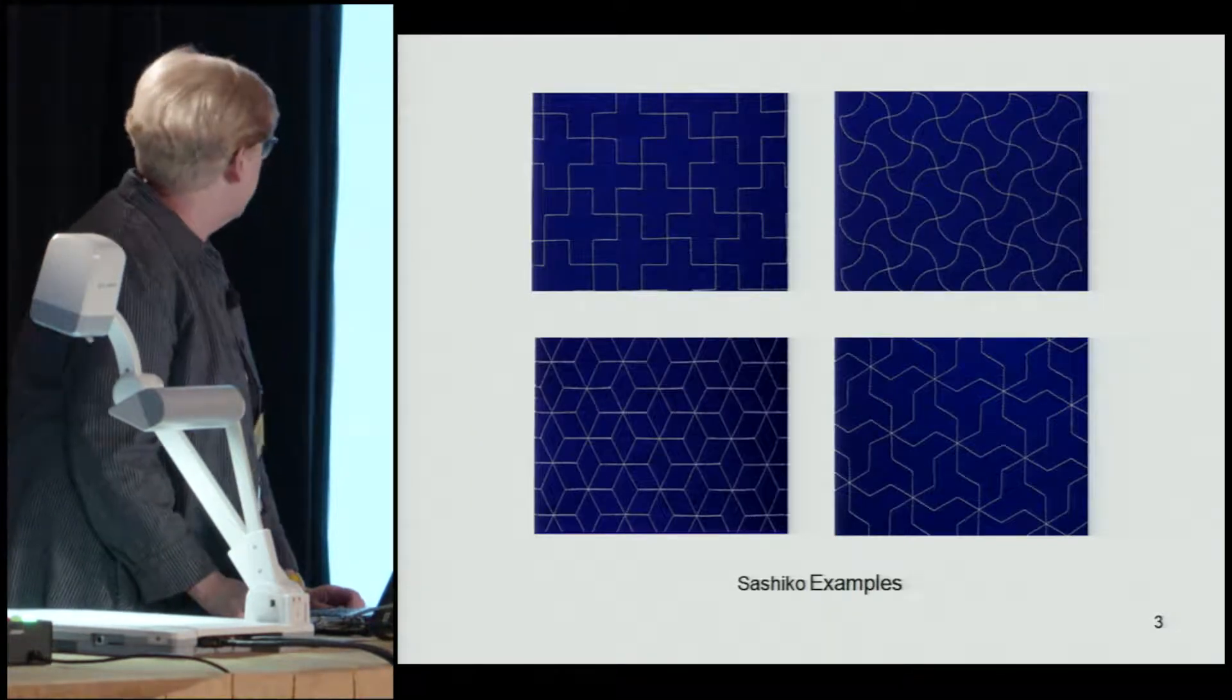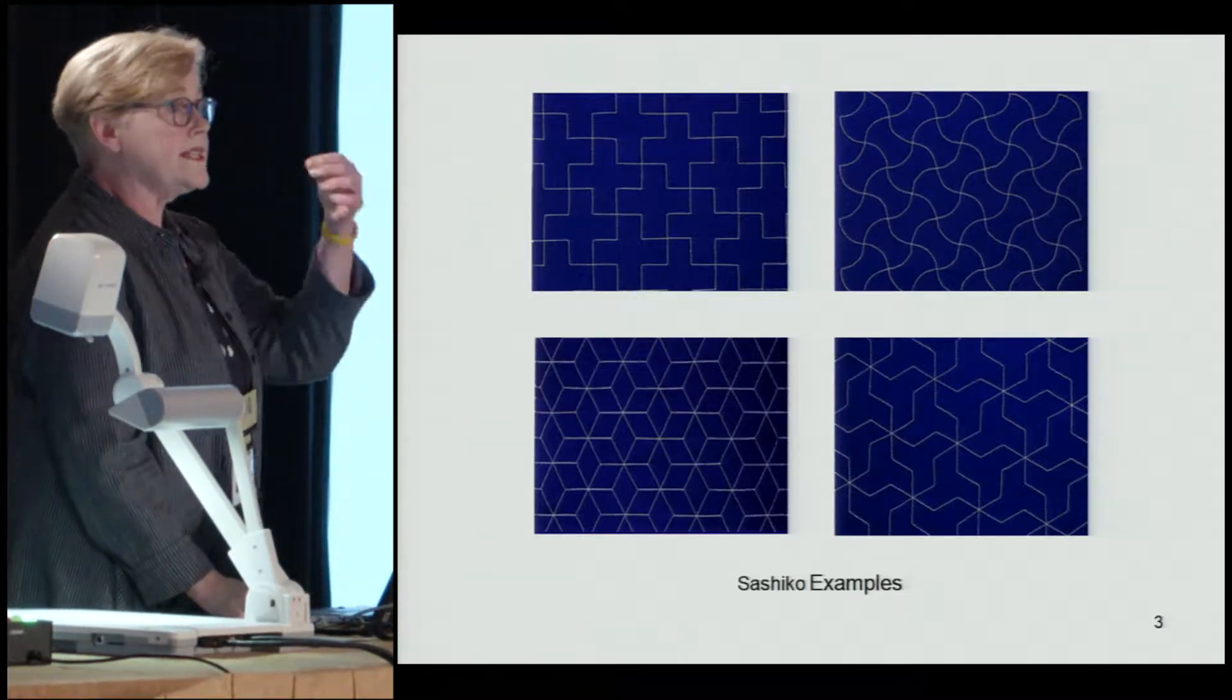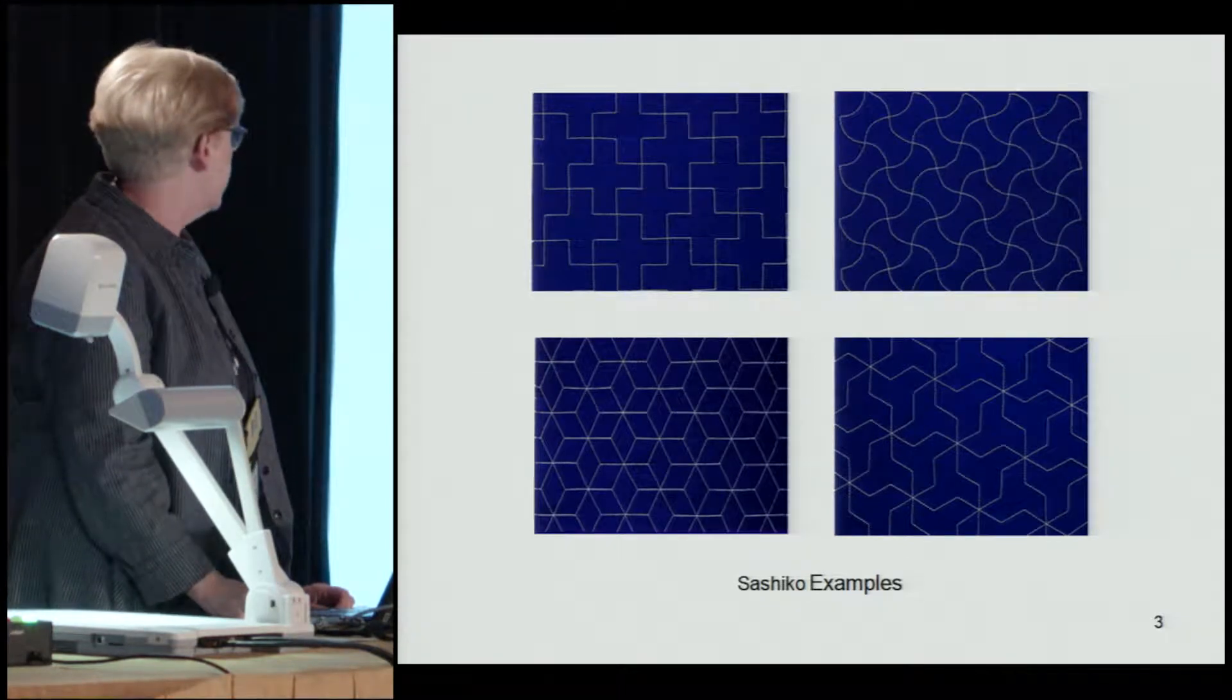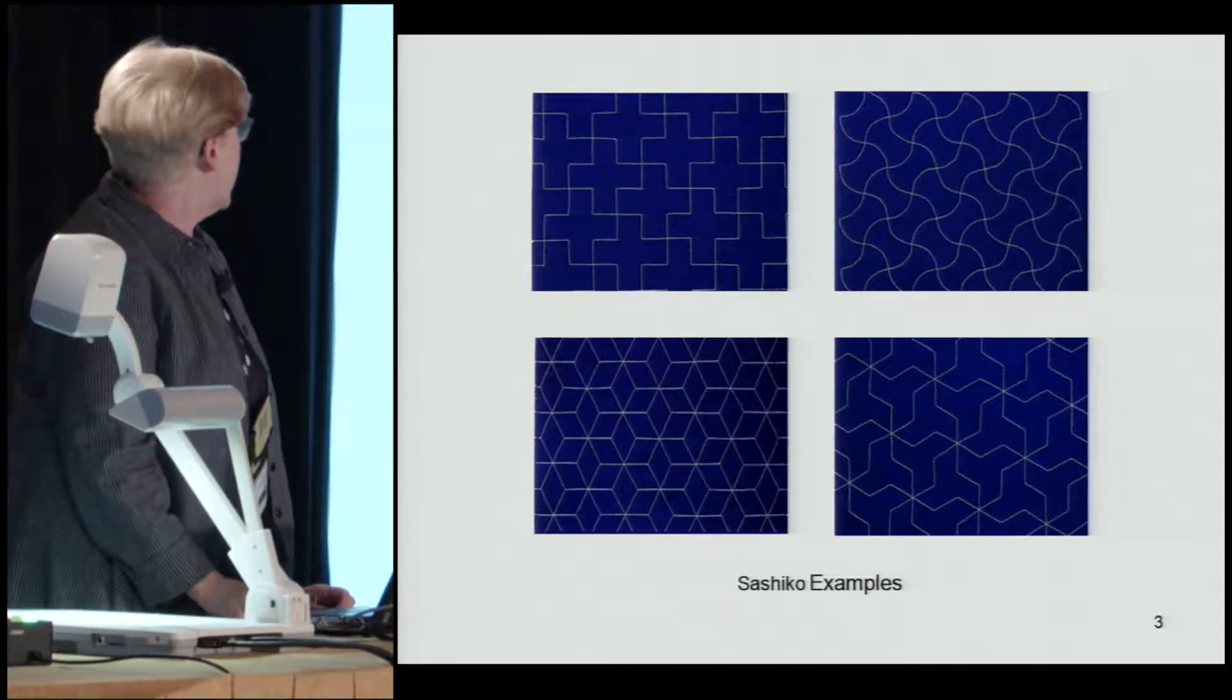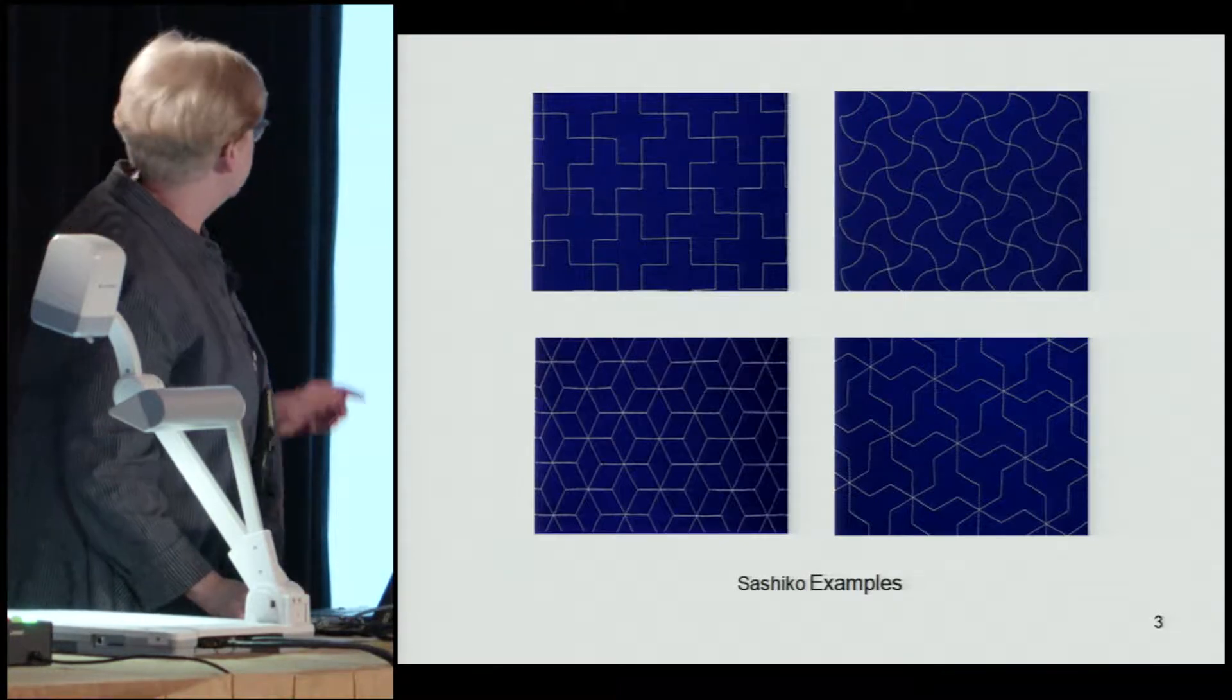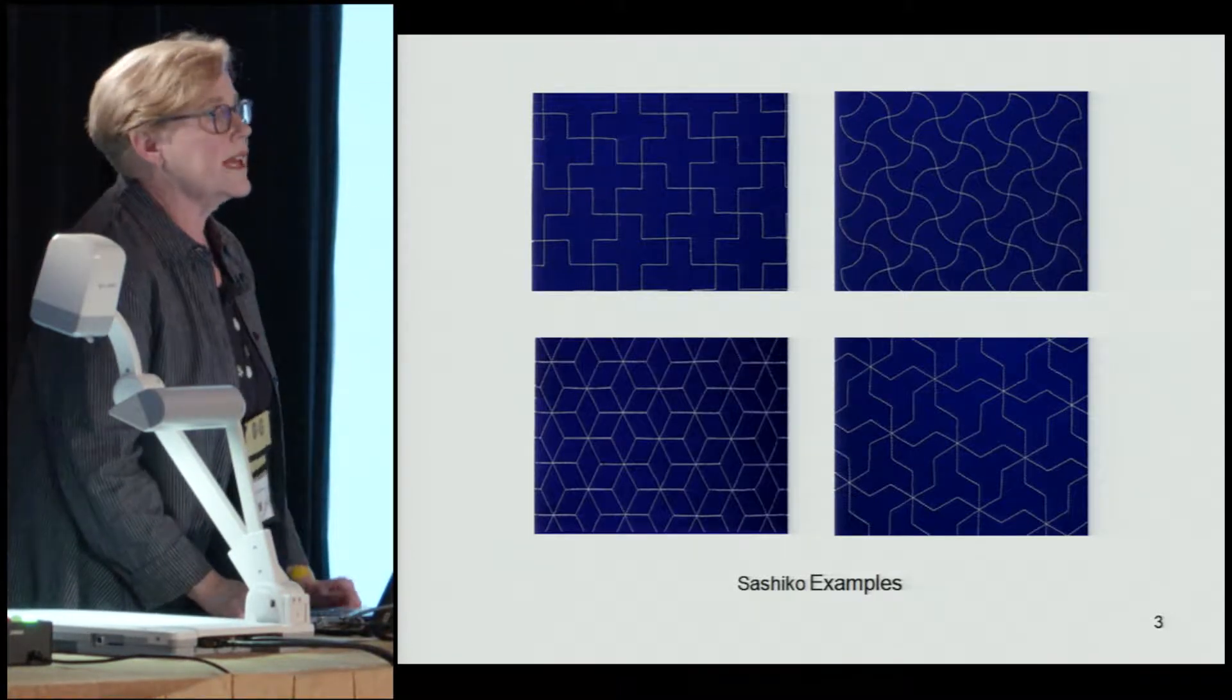Here are some examples. They're done with white stitching on usually a solid colored dark blue fabric, and they're very precise and geometric. As you can see, they produce things that just look like tiles.